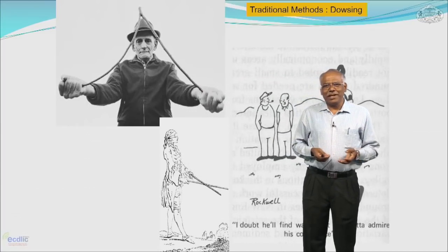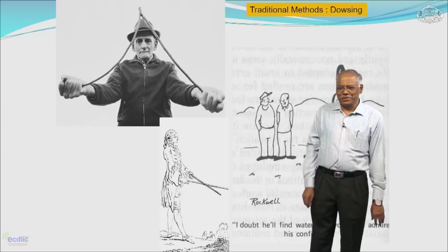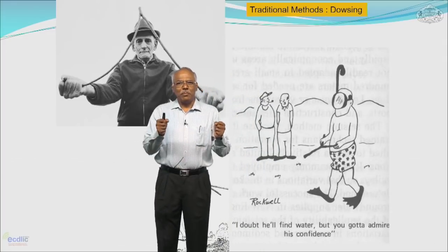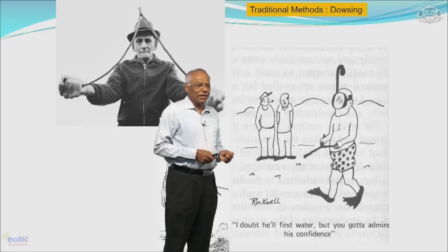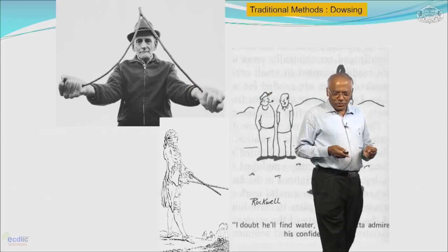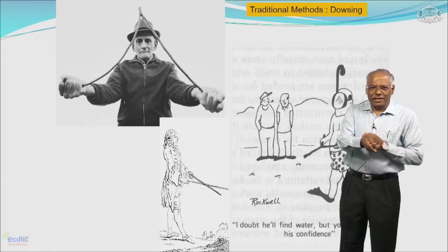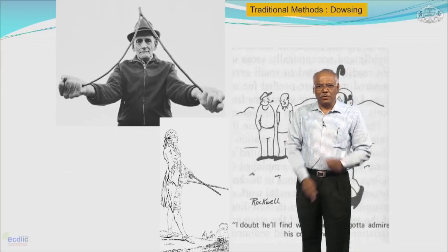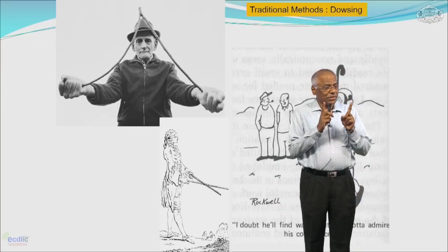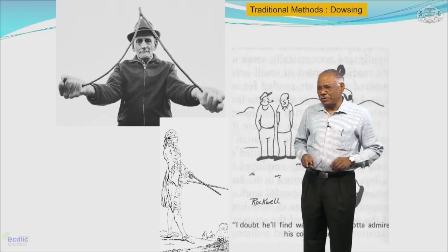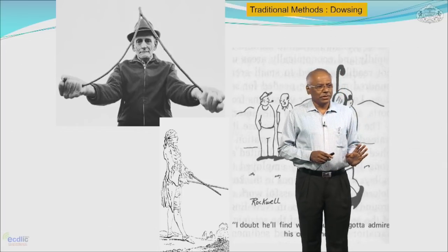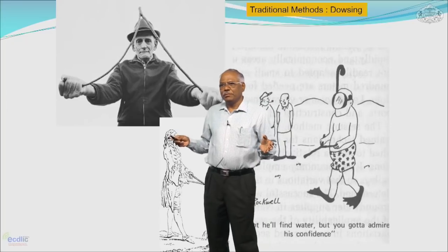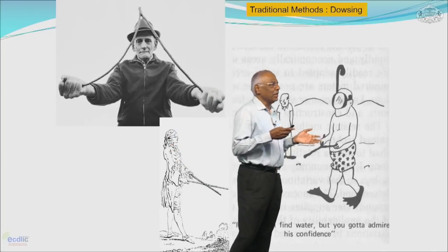There are a lot of doubts and debate about this technique. A slightly changed version uses copper rods held in the hands, and when they cross — like that lady in the picture — this crossing indicates the likelihood of occurrence of ground water. Although there is much discussion and debate, this technique has survived for centuries from ancient societies even into the modern society, and there are many dowsers or dowsing societies across developed countries and in India.